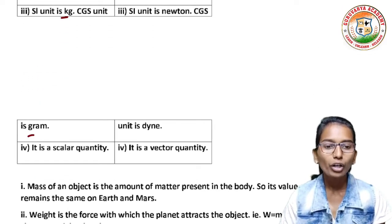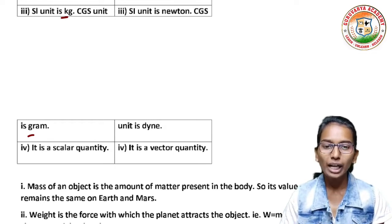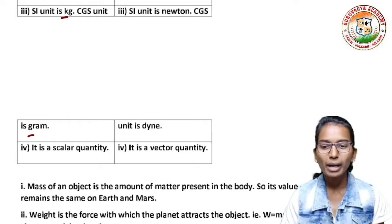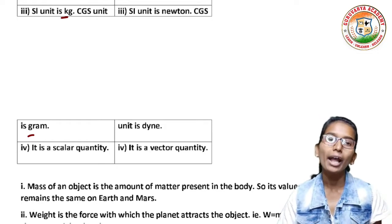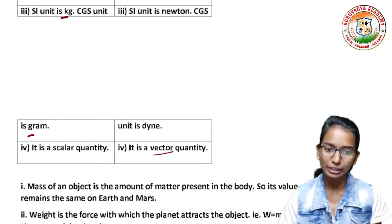Weight has SI unit Newton and CGS unit dyne. Mass is a scalar quantity and weight is a vector quantity.